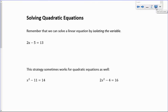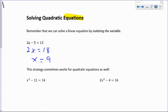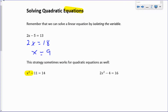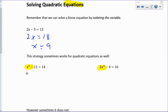That brings us to the second part of the lesson: solving quadratic equations. An equation is anything in math that has an equal sign — a left side, a right side, and an equals sign, like 2x minus 5 equals 13. We call that a linear equation because there's no exponent on x. We solve it by isolating the variable. Quadratic equations have x squareds in them; sometimes you can still isolate the variable in a quadratic equation.